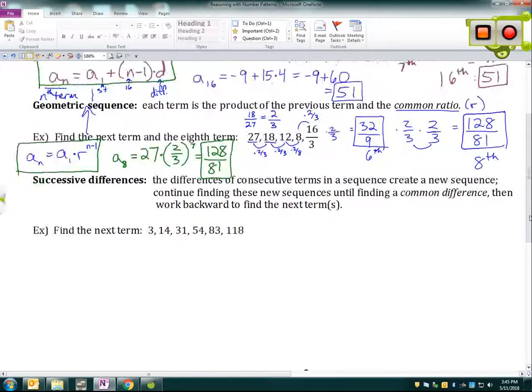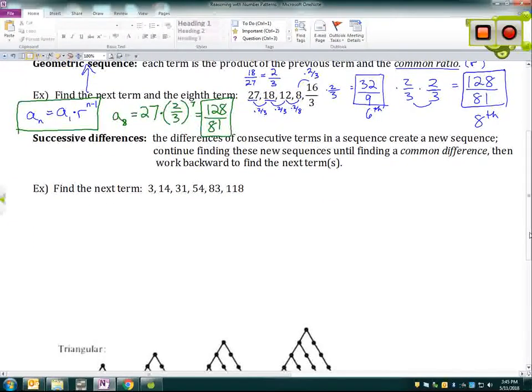All right, the next method is using what's called successive differences. Sometimes the difference between each of the consecutive terms in a sequence is not the same, but it does create a new sequence. So the differences of consecutive terms creates a new sequence, and then we can look at that sequence and look for another pattern with differences. Maybe that has differences, or the same difference in the second sequence. Maybe we need to go to a third sequence or a fourth. But eventually, we should, with this type of sequence, we should be able to get to a common difference.